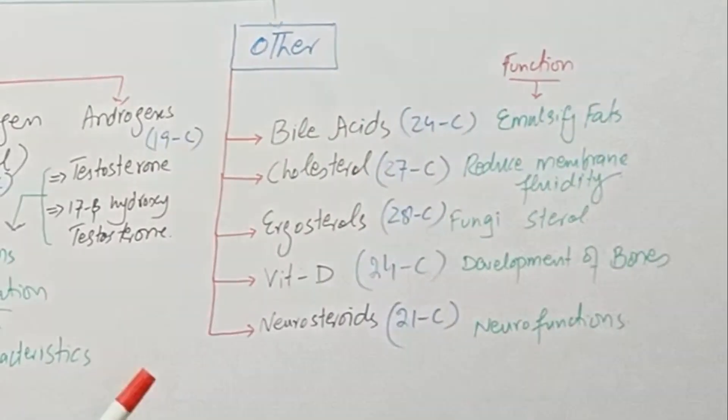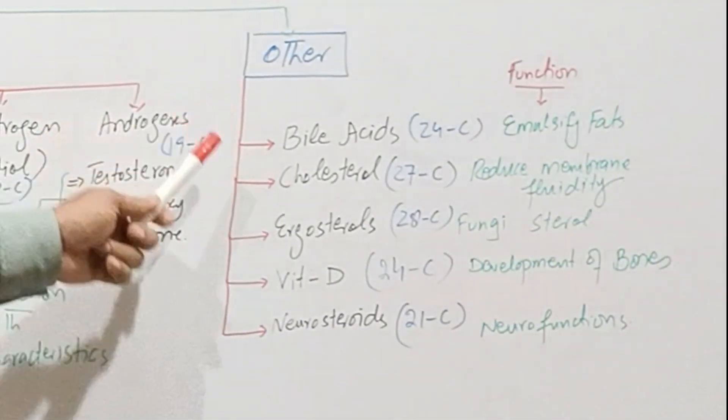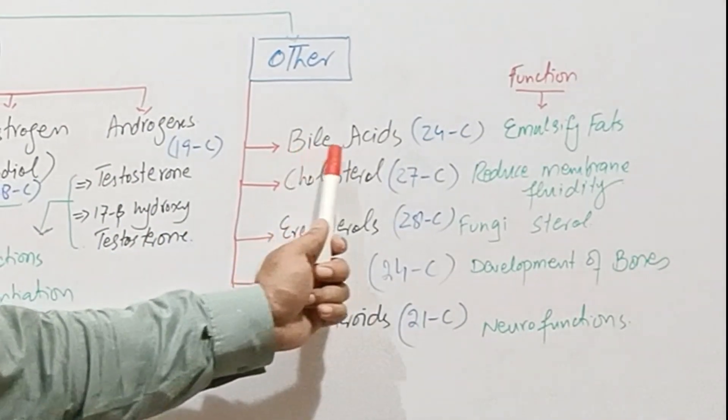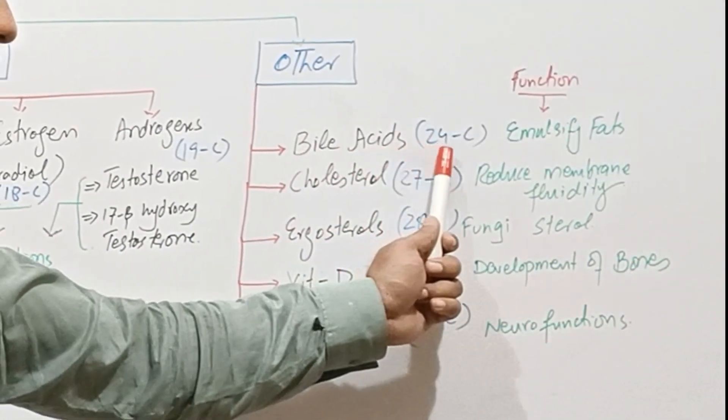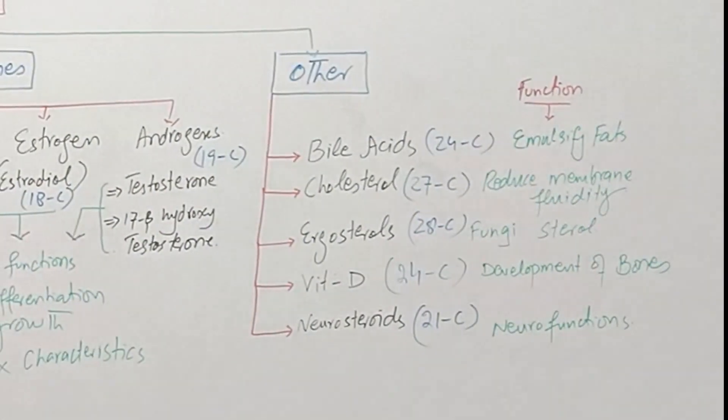Another classified steroids which have different functions include bile acids, which usually contain 24 carbons. These emulsify fat during the digestive process.